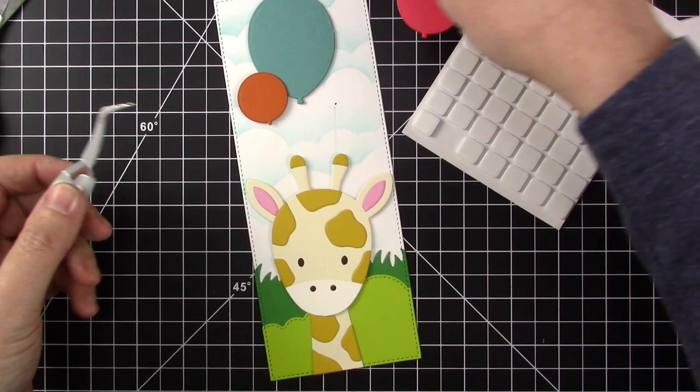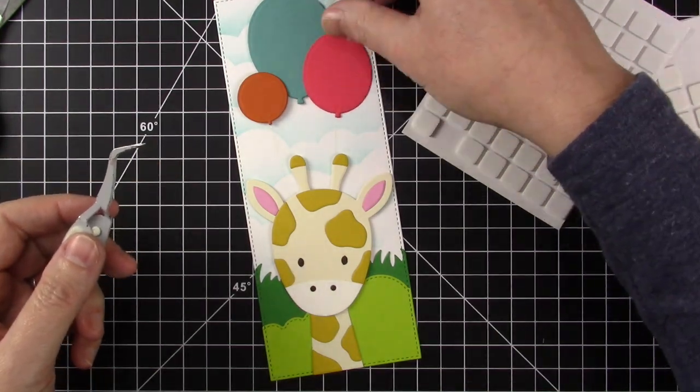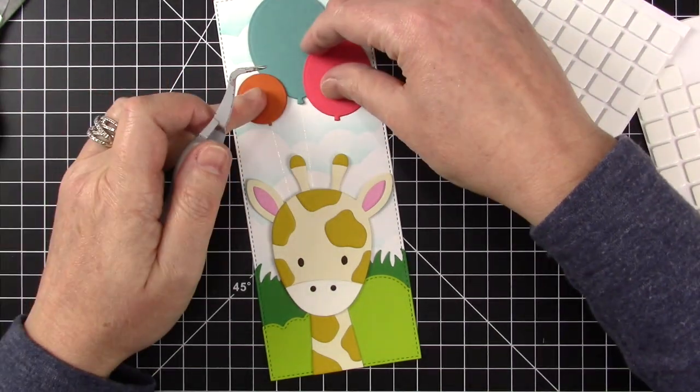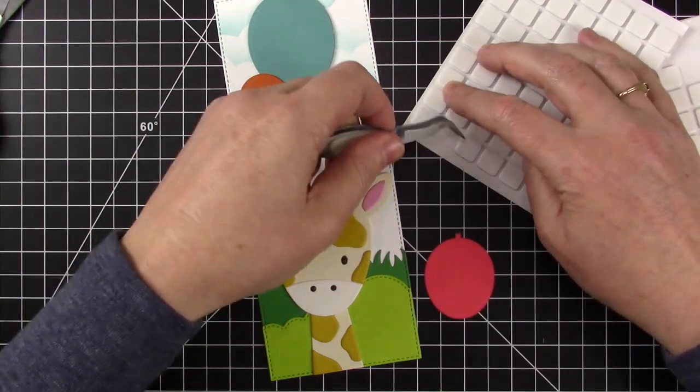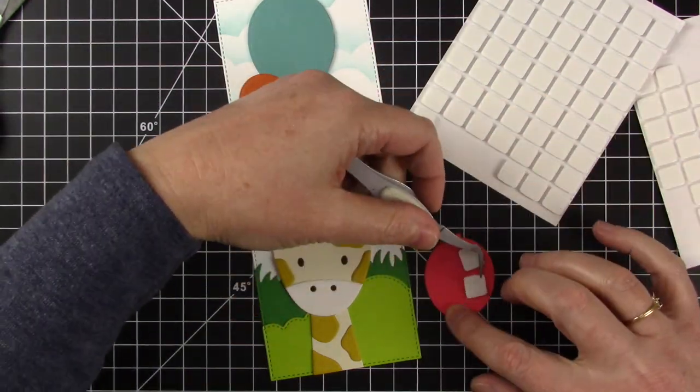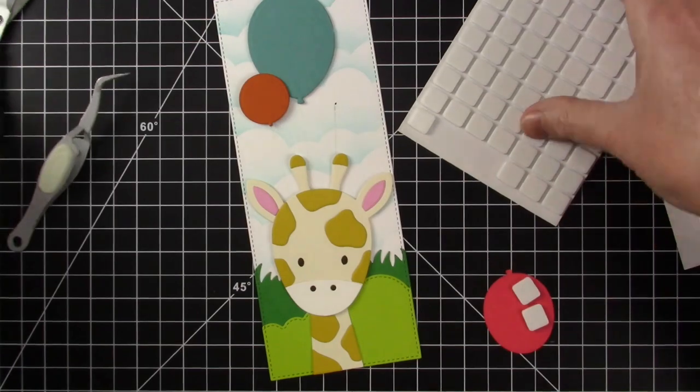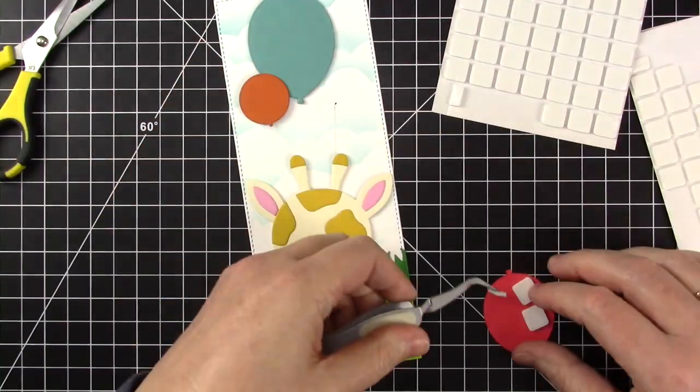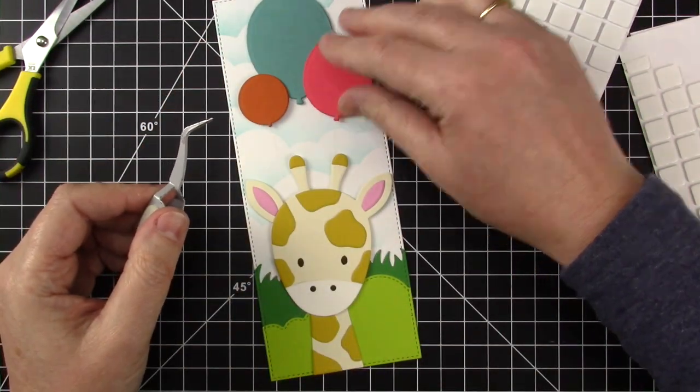Now I'm going to add thicker foam to the front balloons, again making sure that I'm not putting that adhesive anywhere where the balloon is going to touch the blue balloon. And again I'm just going to need a little piece of adhesive so I'm going to cut a strip off and put it on the bottom.